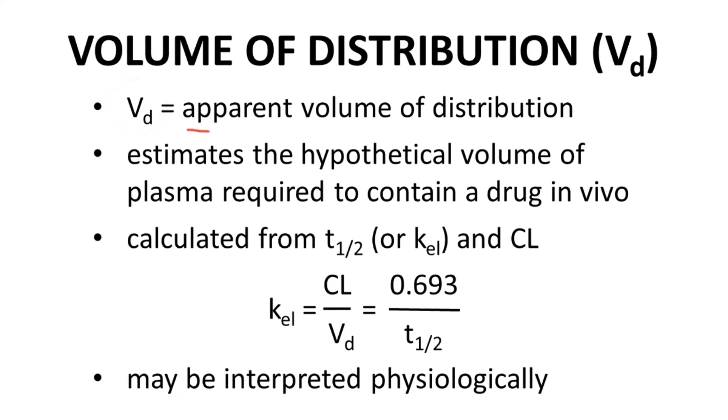We can calculate VD if we already know half-life or KEL and clearance based on the equation on the slide. Volume of distribution is a hypothetical volume of plasma that contains a drug. Although not real, VD can often be interpreted.